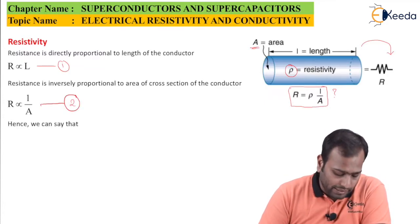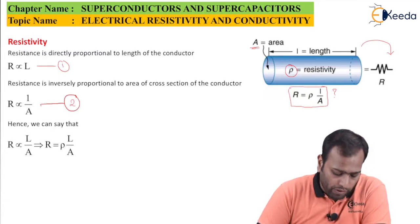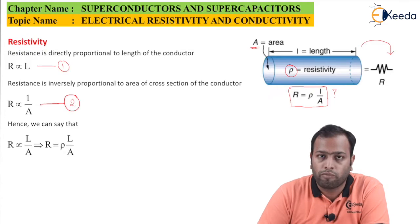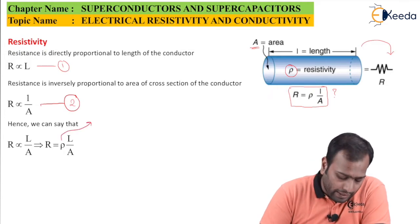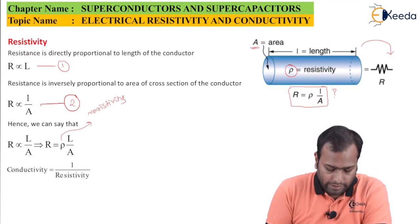By combining these two equations, I can say that R is proportional to L upon A, which means R equals rho into L by A. This rho is the constant of proportionality which is called resistivity. We all know that conductivity is the reciprocal of resistivity.